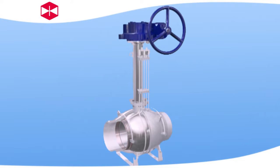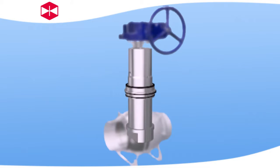The ball is supported by upper and lower stems, and the self-lubricating bearing is set on the upper and lower stems. This lets minimize the torque.